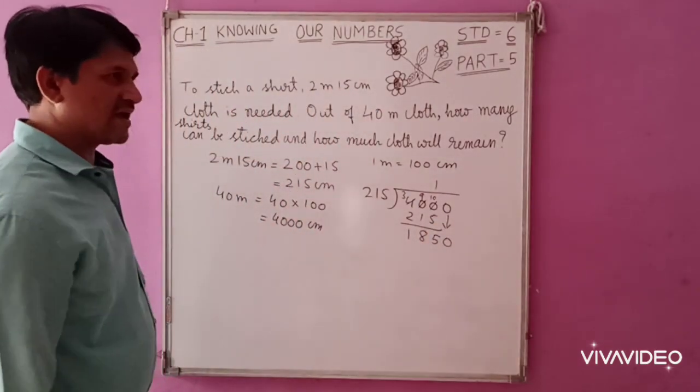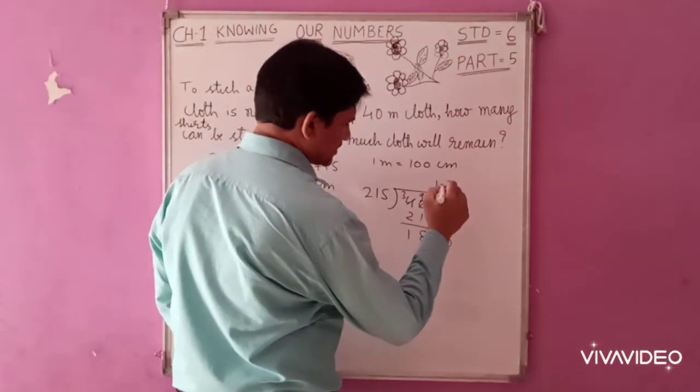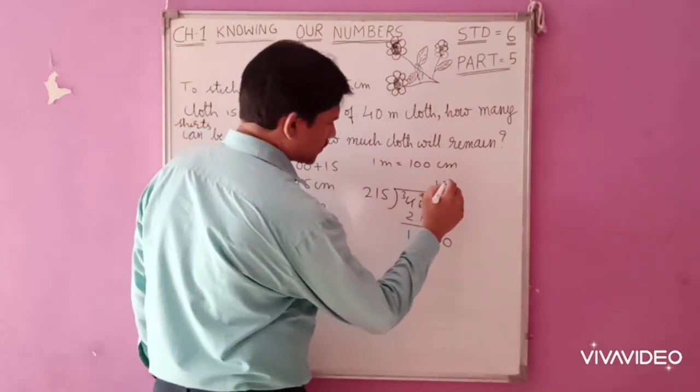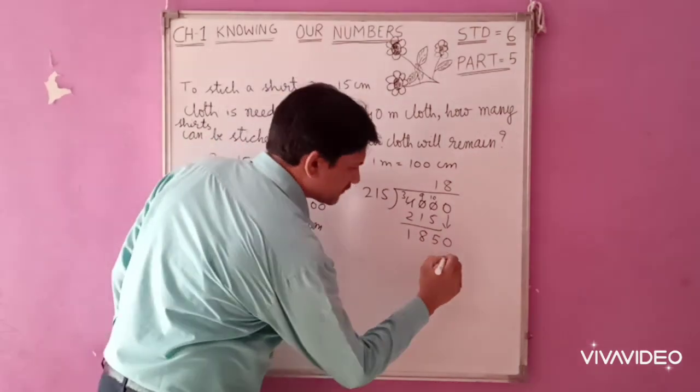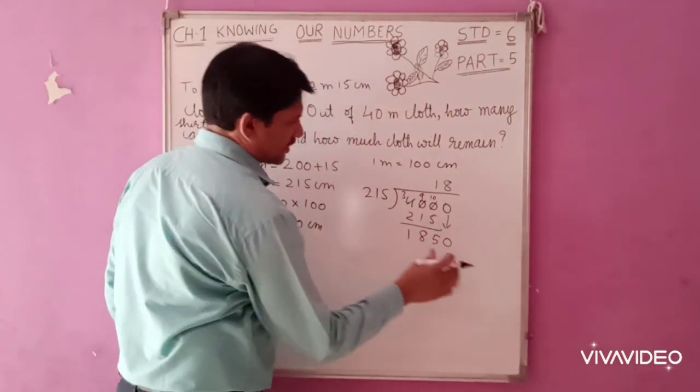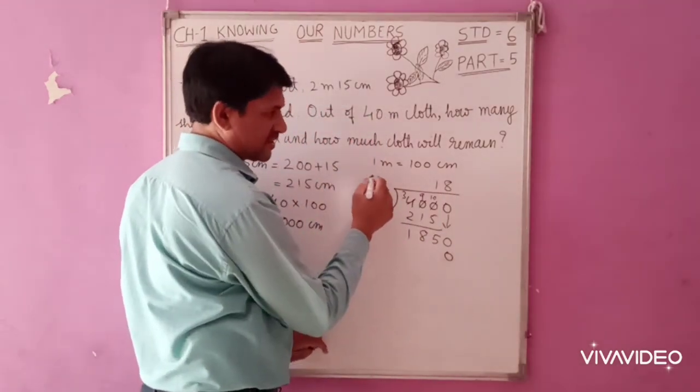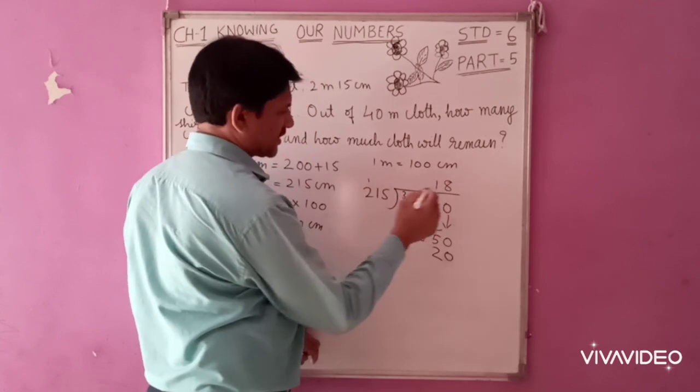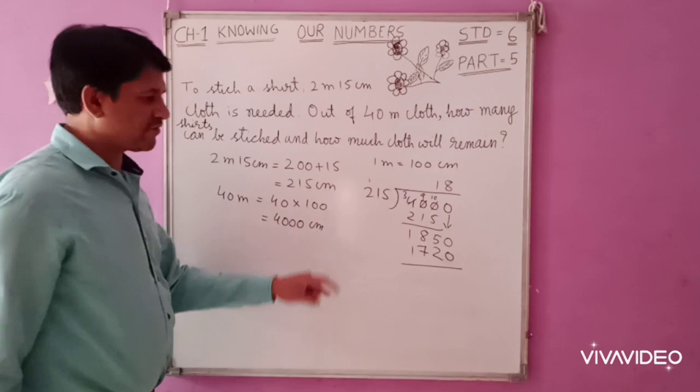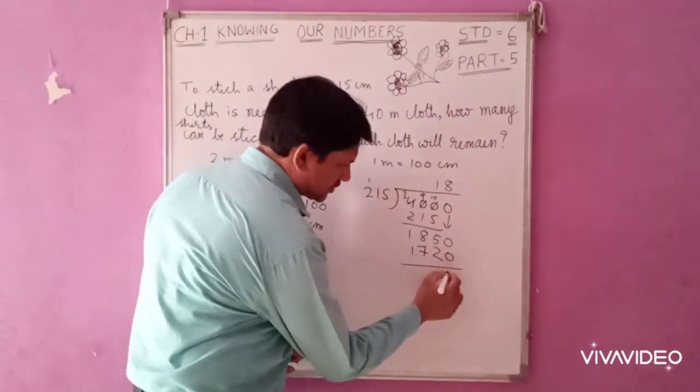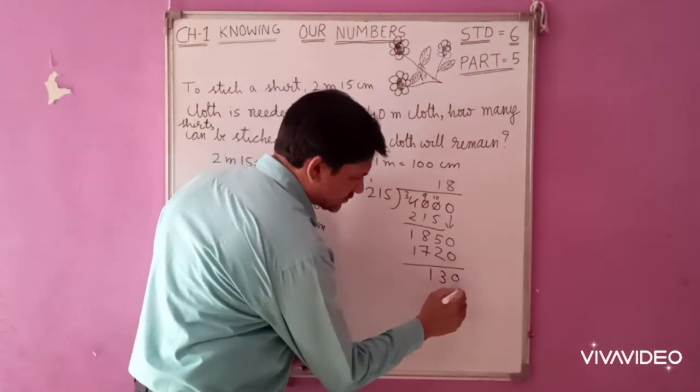Now divide again. 215 goes into 1850. 8 times 5 is 40, carry 4. 8 times 1 is 8 plus 4 is 12, carry 1. 8 times 2 is 16 plus 1 is 17. Subtract: 0, 5 minus 2 is 3, 8 minus 7 is 1. The quotient is 18.